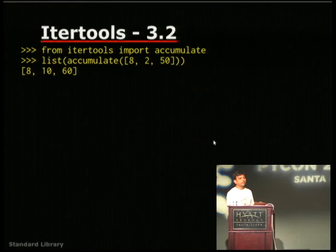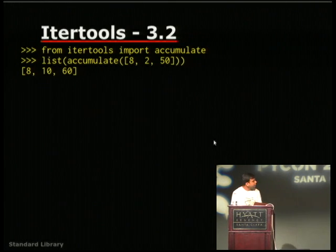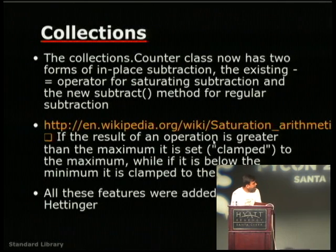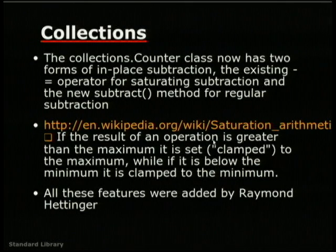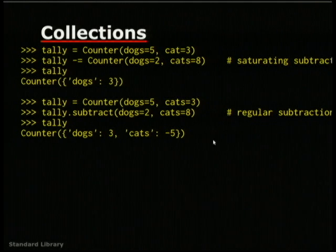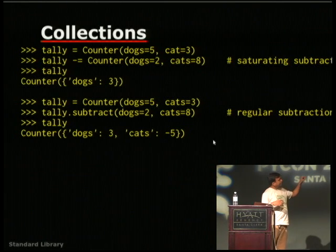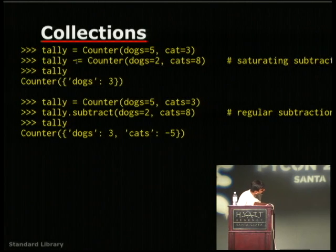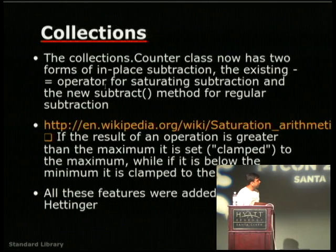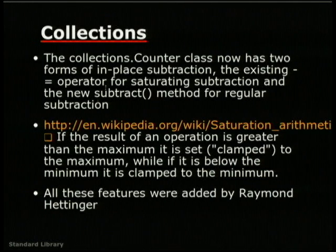Itertools provides a new algorithm called accumulate — accumulating values like 8 plus 2 gives 10, and so on. Collections provides saturation arithmetic, which means it provides a lower bound and upper bound. For example, if the class Counter has dogs equal to 5 and cats equal to 3, and you subtract using minus-equal-to, saturation arithmetic ensures that negative values that don't make sense are clamped: results greater than the maximum are set to the maximum, and results below the minimum are clamped to the minimum.